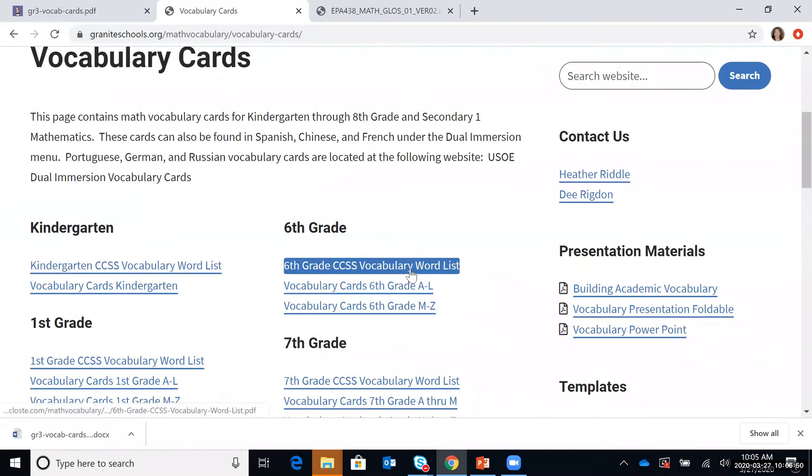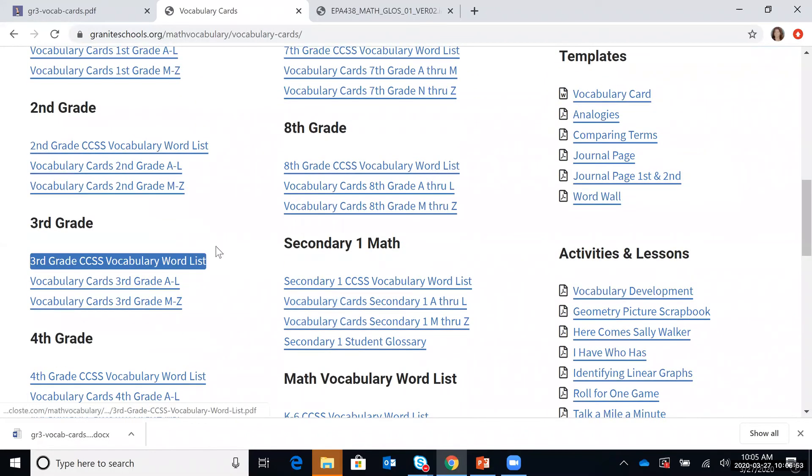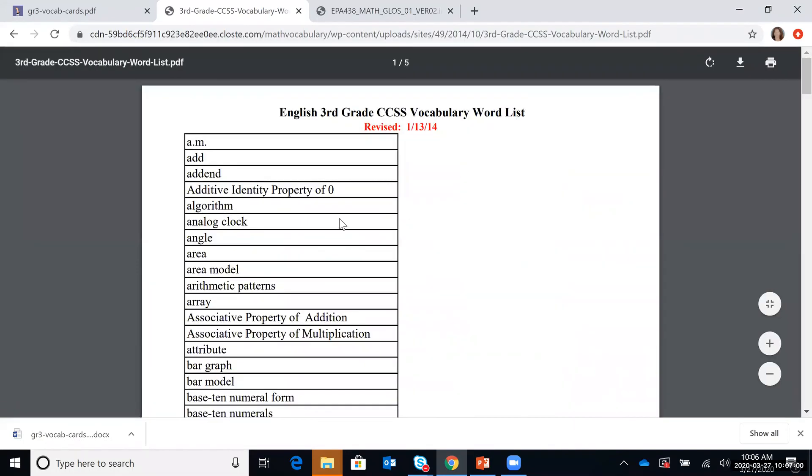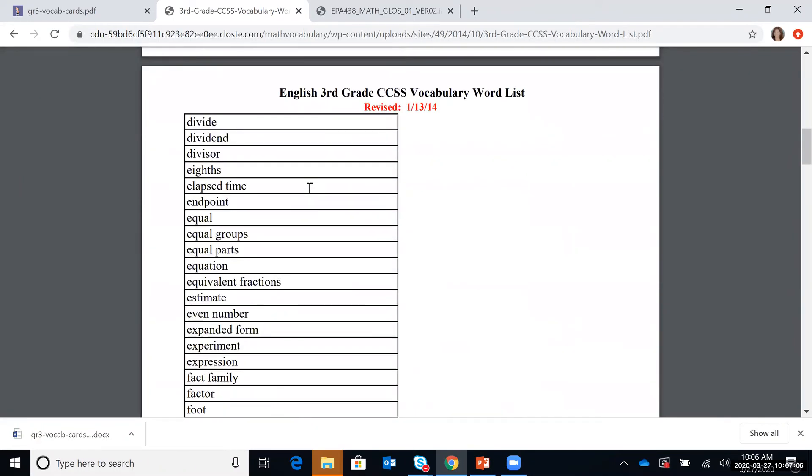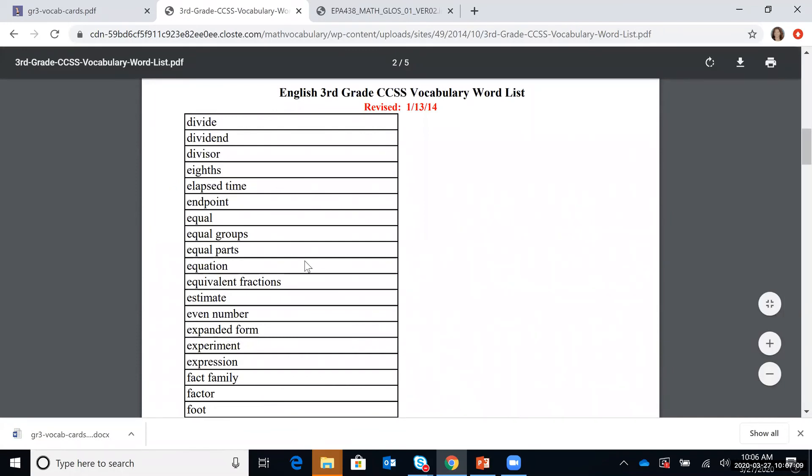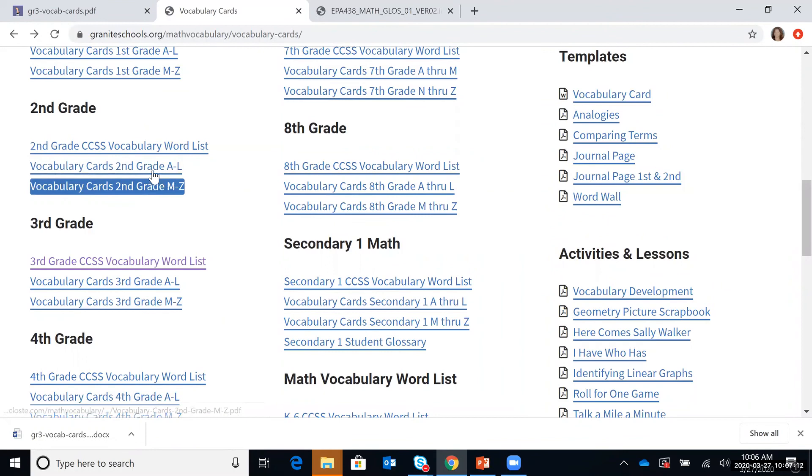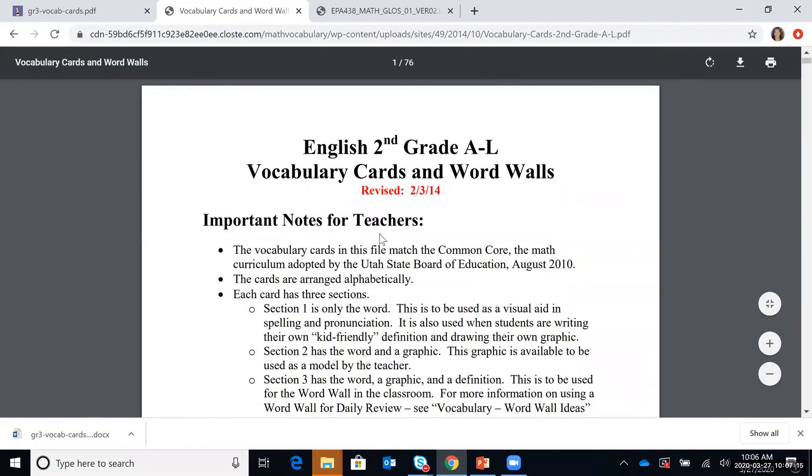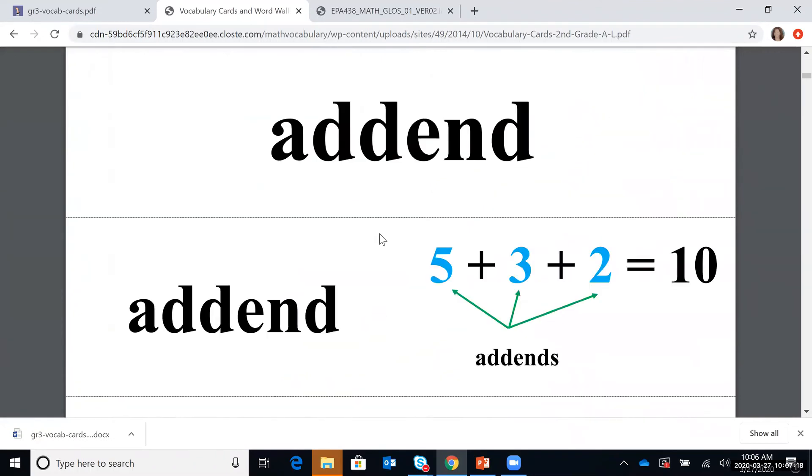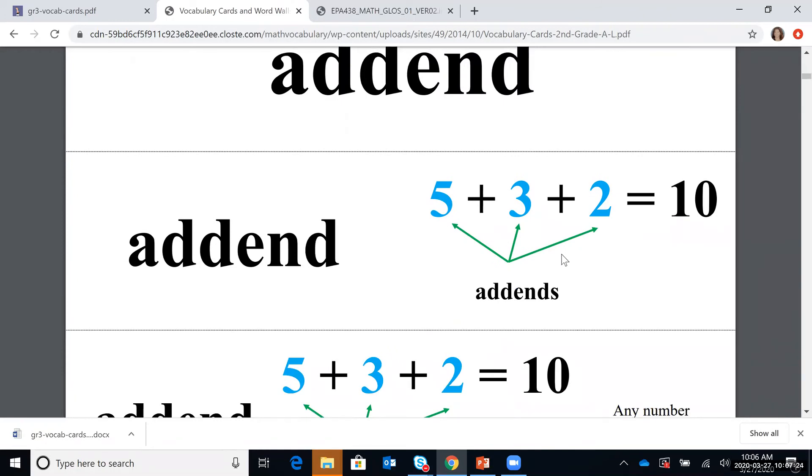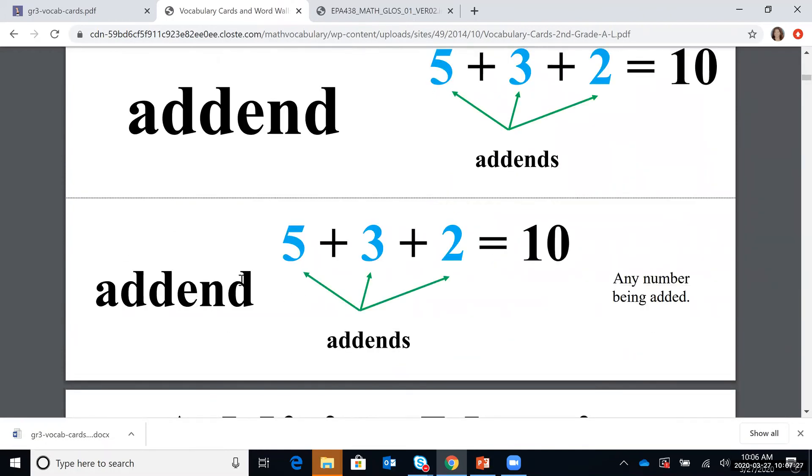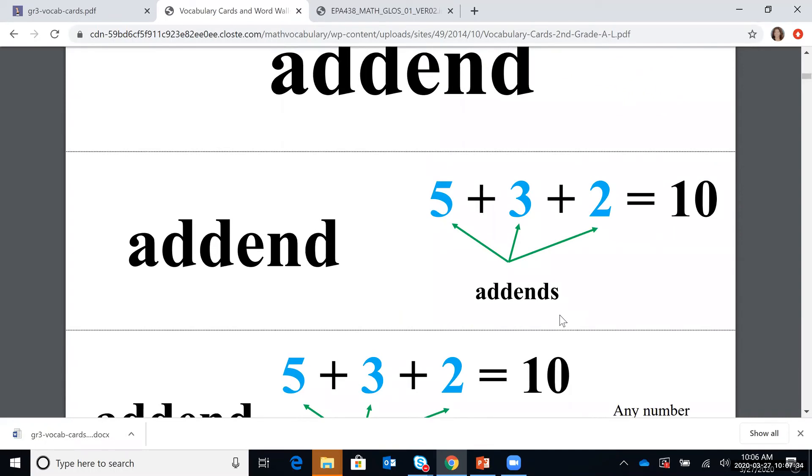So you can see here we'll take another third grade example. This is aligned to the Common Core Standards. You can pull up the vocabulary word list and it will give you in alphabetical order all of the different cards that are included in that grade level. So you look for the words you want to find and then you can go back. So I'm going to look for the word addend. So you can see on each card it has the term, it has it in an example, and then it includes the word, the example, and a definition.